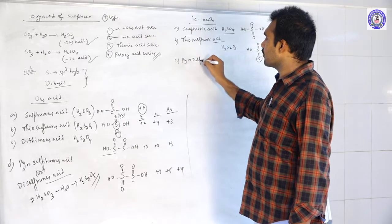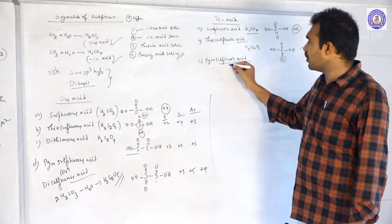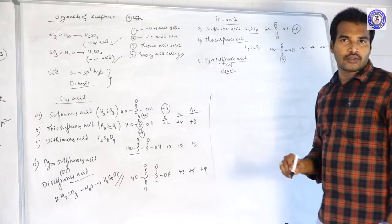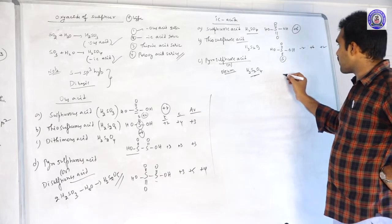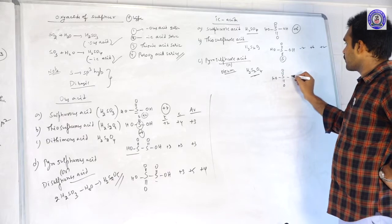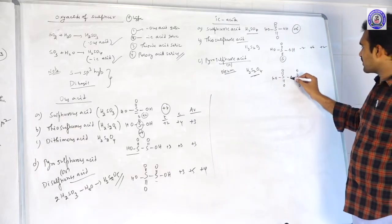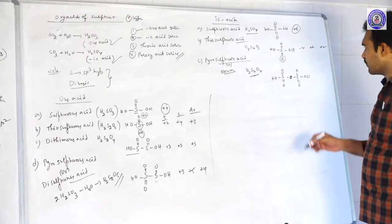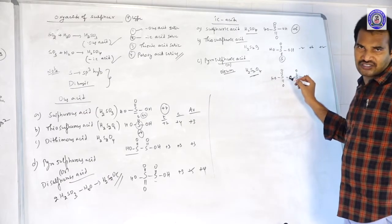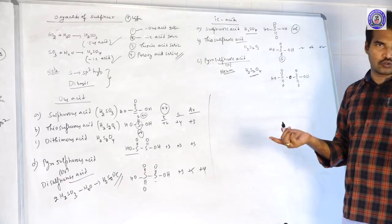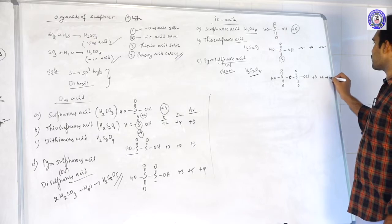Third: Pyrosulfuric acid (H2S2O7), also called Oleum. The structure is two SO4 units connected by an S−O−S linkage. Each sulfur has oxidation state +6; average is also +6. The bridging oxygen is shared between two neighboring atoms, contributing −1 from each side.